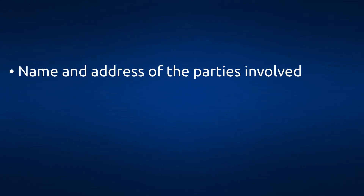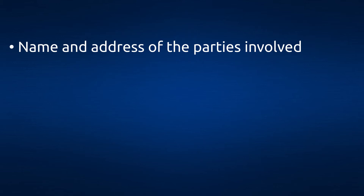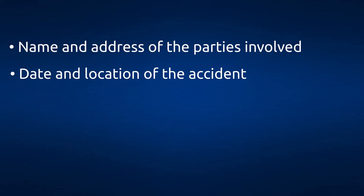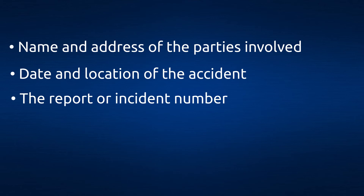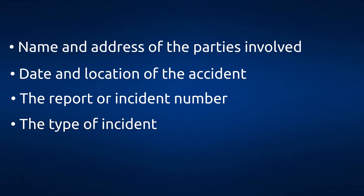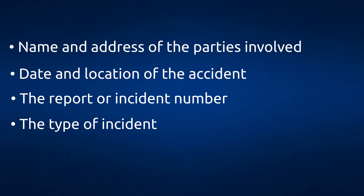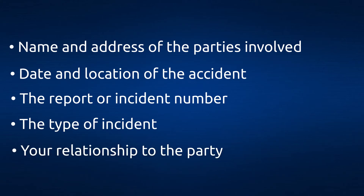The form will likely ask for the following information: name and address of the parties involved, date and location of the accident, the report or incident number if you know it, the type of incident — you will be requesting information about an automobile accident — and if you're not the party in the accident, your relationship to the party.